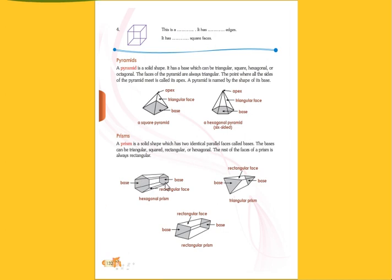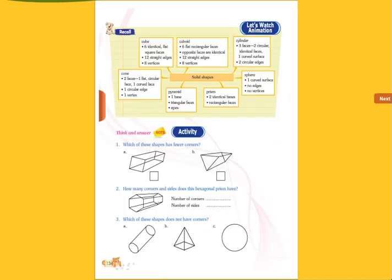These are the bases, okay? Then this is the triangular face and it is a hexagonal prism. This is triangular prism and this is the rectangular prism, okay? Then we go for the animation of this, okay?